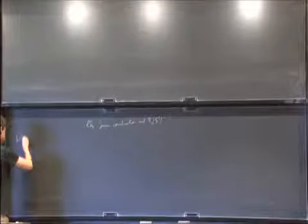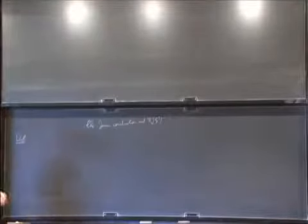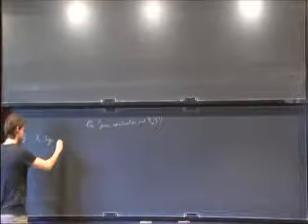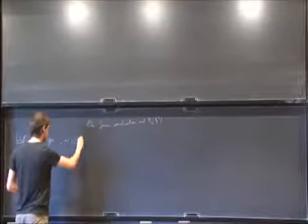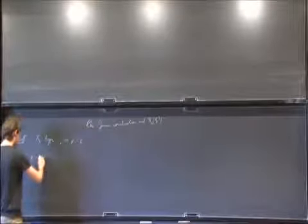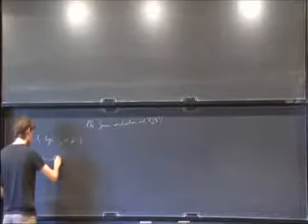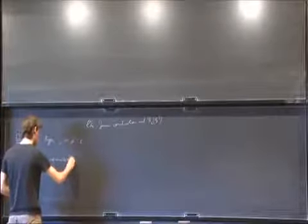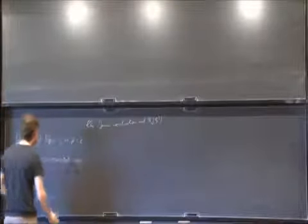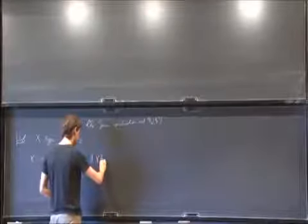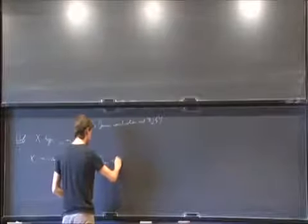First I'll recall the notion of connectedness of a space and of a map, because I will use that everywhere. Take X a type and n at least minus 2. We say X is n-connected if and only if the n-truncation of X is contractible.